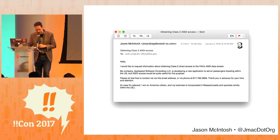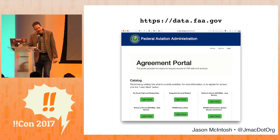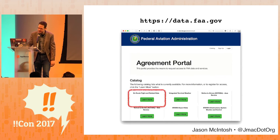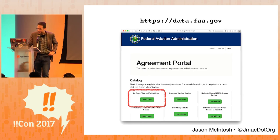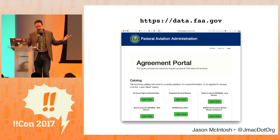A week later, I got a response, and it said: ASDI? We retired that. Have you checked data.faa.gov? You know, the website we have that is literally covered in giant green buttons, the very first one of which is labeled on-route flight and related data. And I said, how is your robots.txt file? You know what? Never mind. Thank you. And I hit that button.